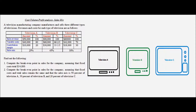Let us look at another example of cost volume profit analysis. A television manufacturing company manufactures and sells three different types of televisions. Revenues and costs for each type of television are given to us in this table. We have three different types of televisions: television A, television B, and television C.